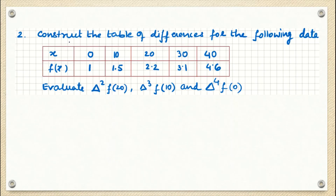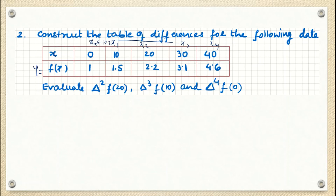In the second question they ask us to construct a table of differences for given discrete data where x = 0, 10, 20, 30, 40 and y = f(x) = 1, 1.5, 2.2, 3.1, 4.6. Here h = 10. They also ask for the second forward difference of f(20), the third forward difference of f(10), and the fourth forward difference of f(0).